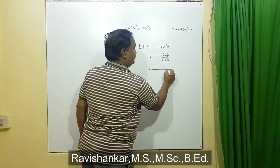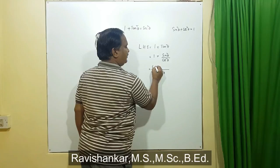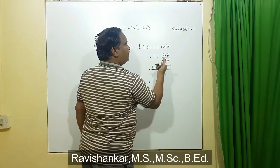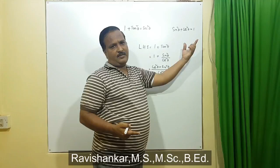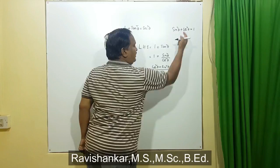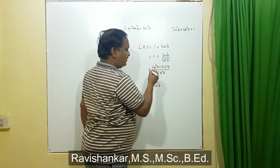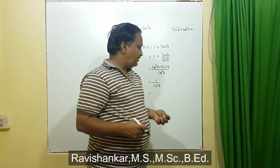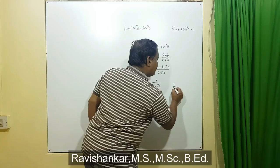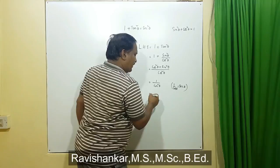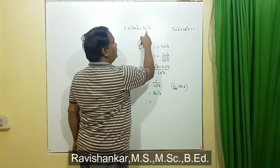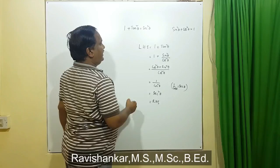Now let us take LCM cos square theta. So cos square theta will come here and sin square theta. The first identity tells us that sin square theta plus cos square theta is equal to 1, so we can replace that numerator with 1. We got 1 by cos square theta. Cos theta is the reciprocal of secant theta, so 1 by cos theta is nothing but secant theta. Therefore 1 by cos square theta is equal to secant square theta.